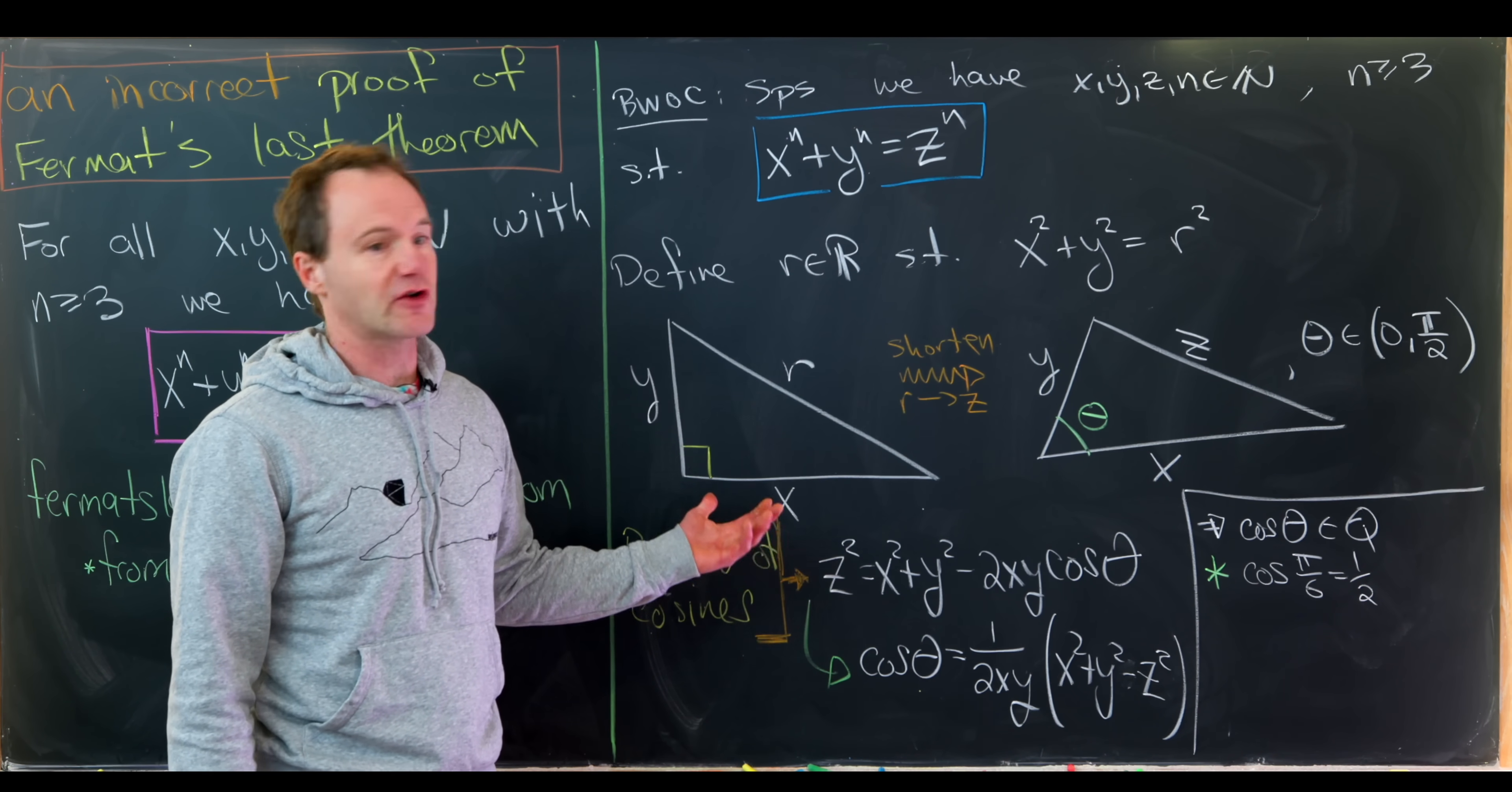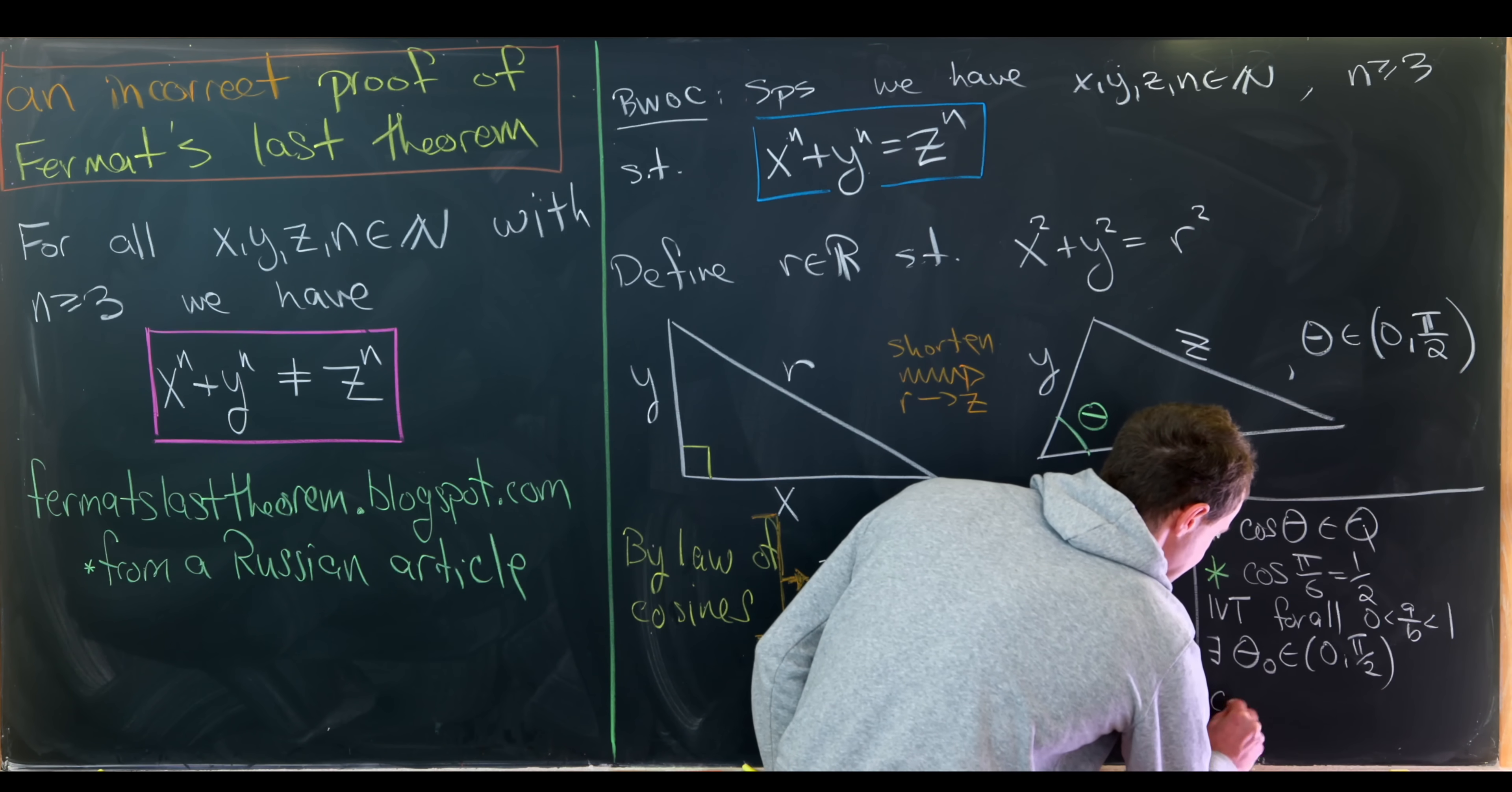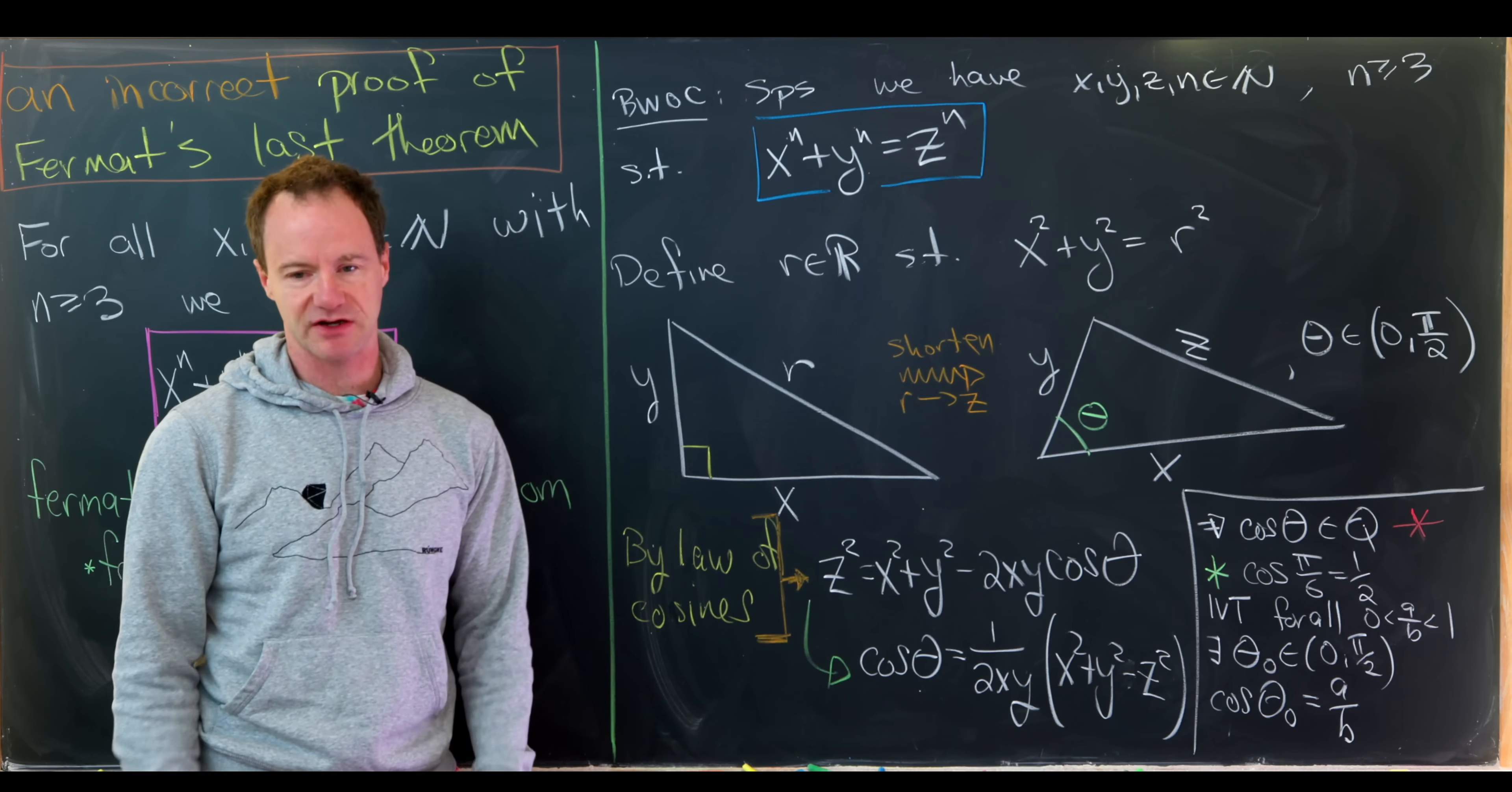Well, then we could just further argue more and notice that by the intermediate value theorem for all rational numbers, which I'll call a over b between 0 and 1, there exists something I'll call theta 0 between 0 and pi over 2 such that cosine of theta 0 equals a over b. And that's because cosine is a continuous function. So just to reiterate here, the author claimed that the contradiction occurred right here where he said that cosine of theta was a rational number. But clearly that's not a contradiction because cosine is allowed to be a rational number.